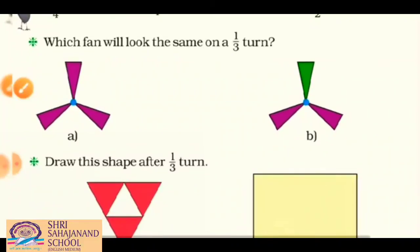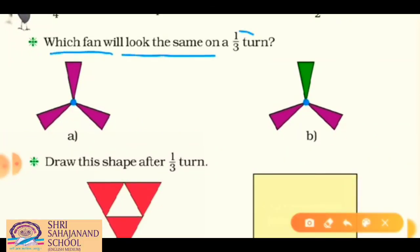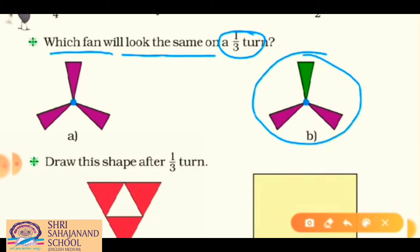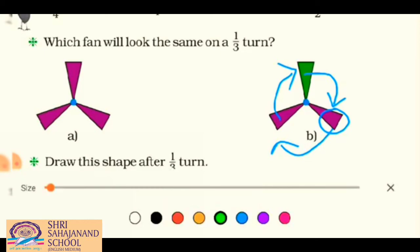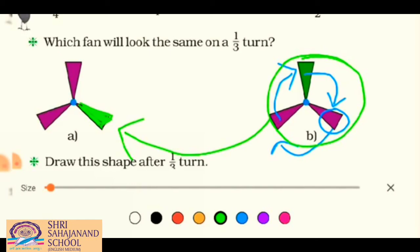Now we have a question about fans on one third turn. Let's understand what one third turn means. We have three blades — the first is green and the other two are maroon. In one third turn to the right, the green blade moves to the next position and the others follow. So after one third turn, the picture will look like this.